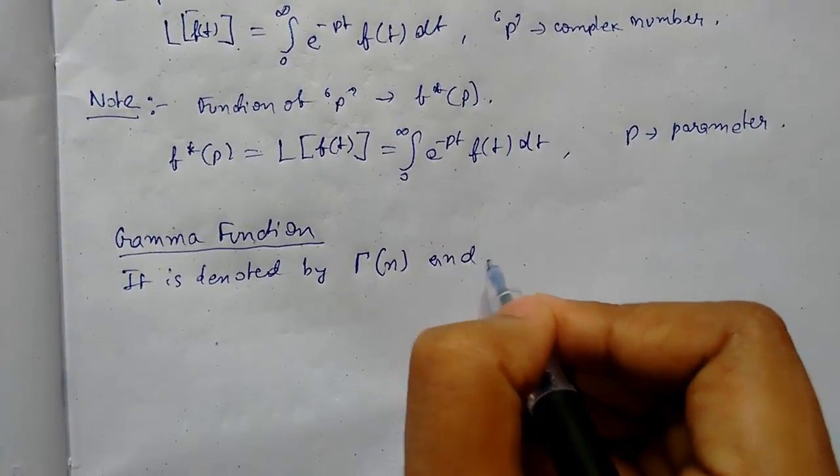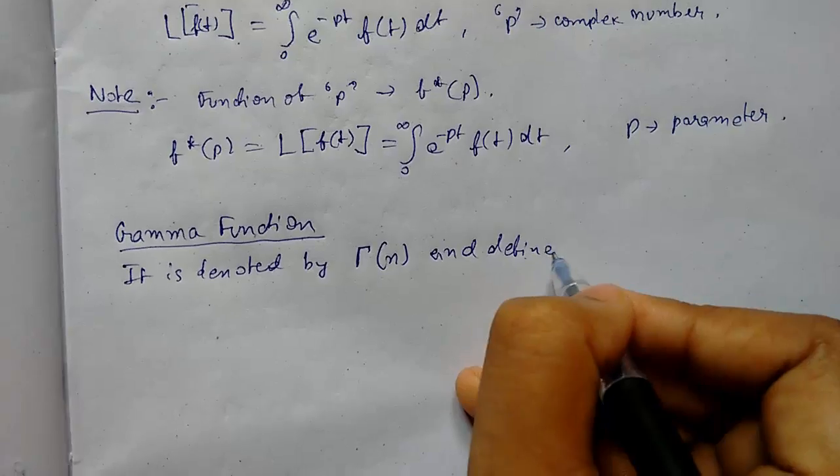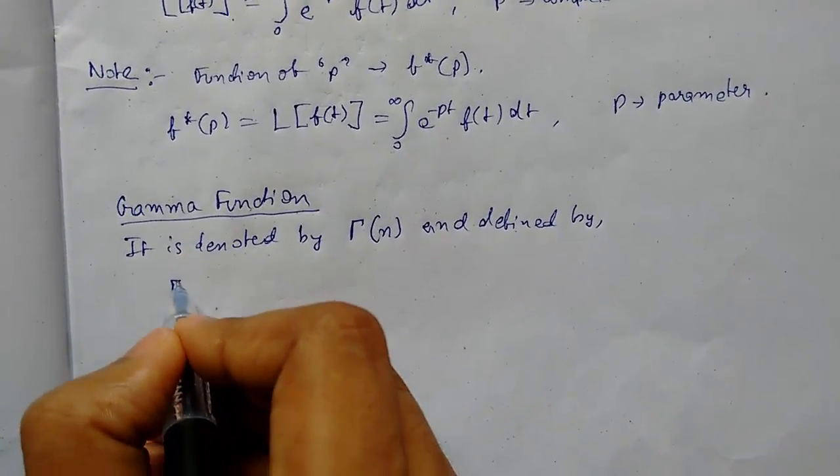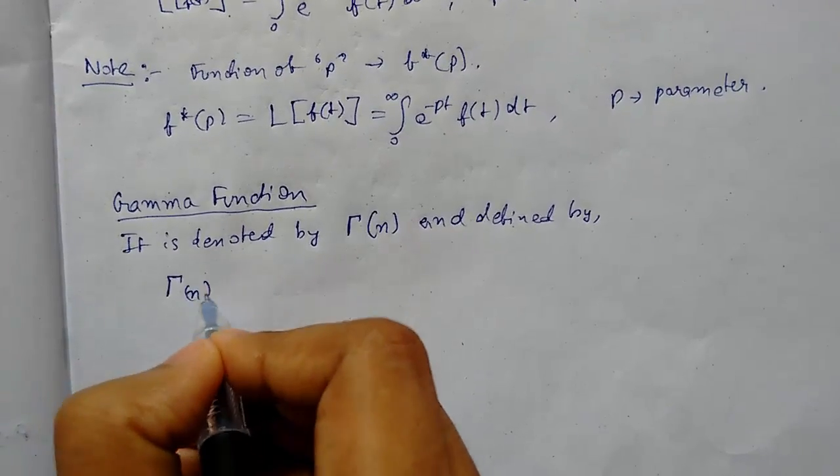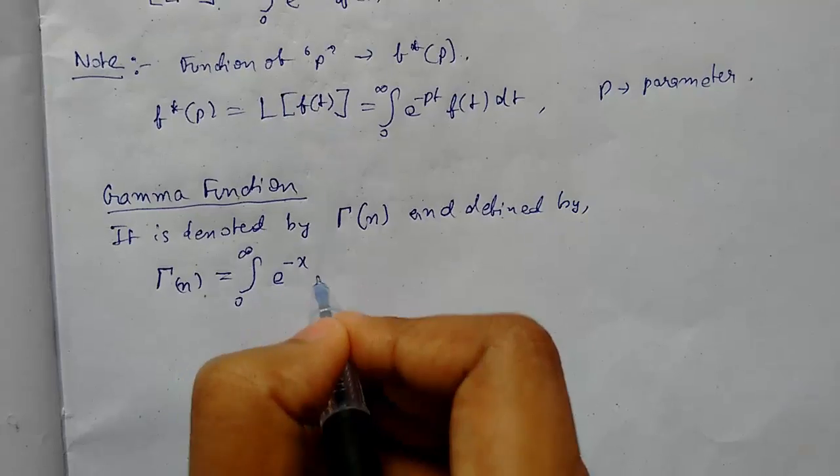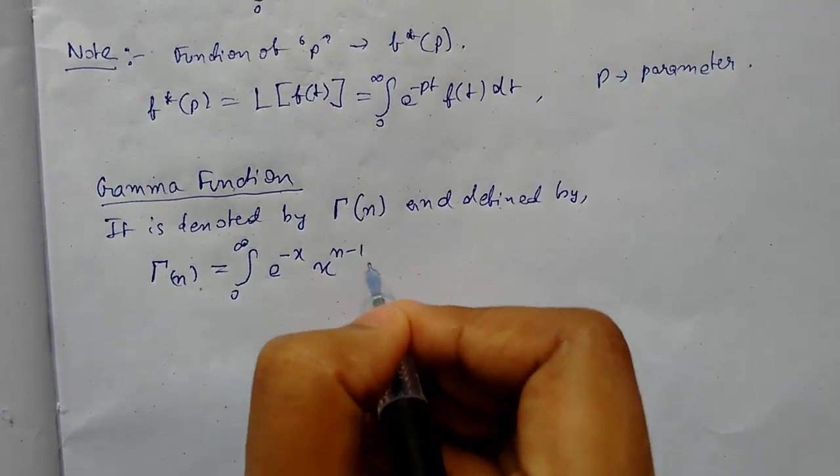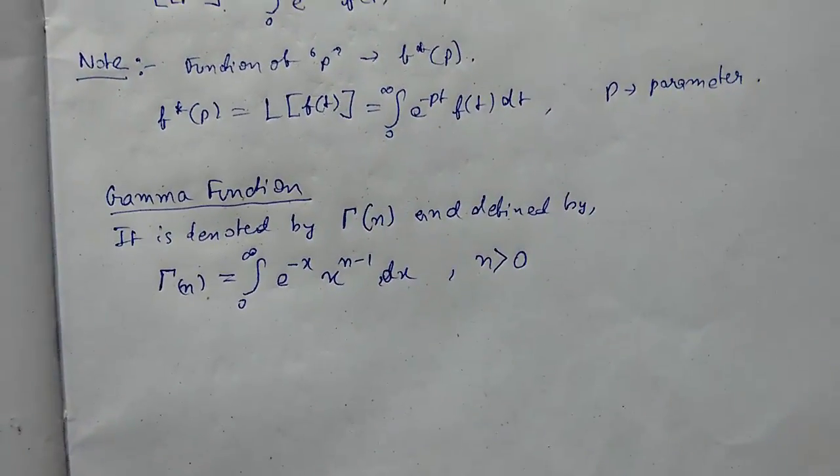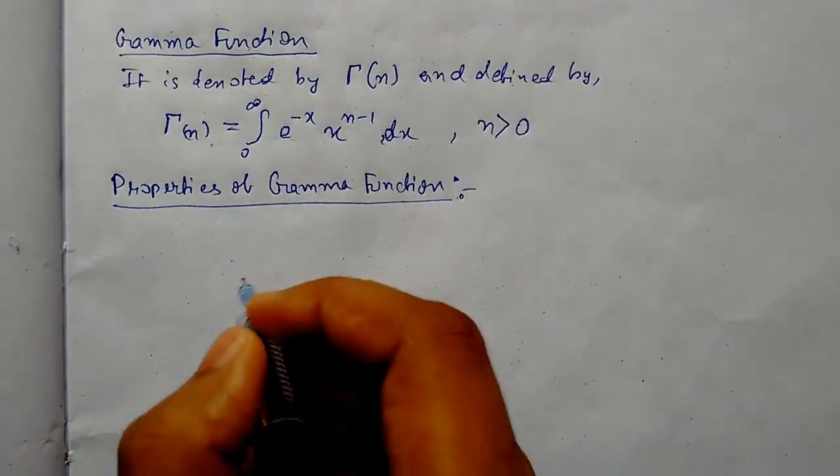And defined by gamma n equals 0 to infinity e to the power minus x, x to the power n minus 1, dx, where n must be greater than 0.